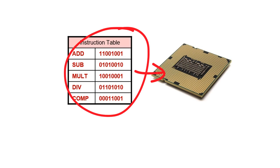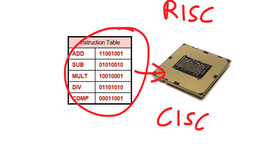Those that belong to the reduced instruction set computing, or RISC, and those that belong to complex instruction set computing, or CISC. The purpose of this video is to understand the main differences between and the uses of the complex instruction set computer and the reduced instruction set computer processing systems.